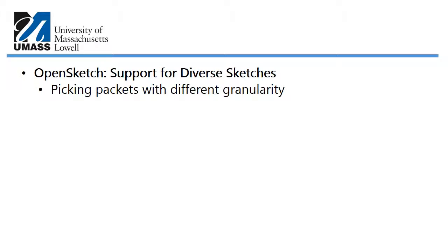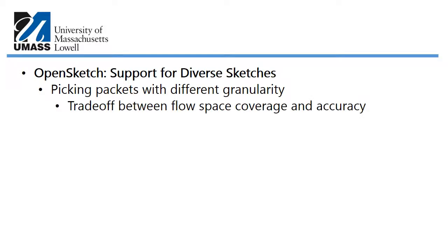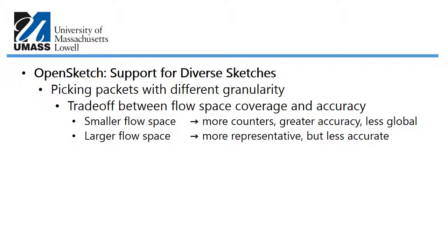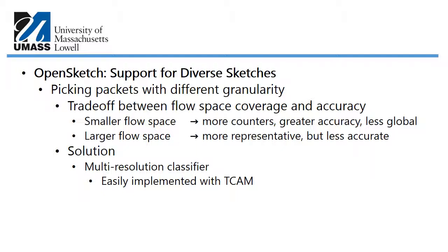OpenSketch supports diverse sketches, including picking packets with different granularity. There is a trade-off between flow space coverage and accuracy: a smaller flow space means more counters and greater accuracy but less global representativeness, while a larger flow space is more representative but less accurate. OpenSketch's solution is a multi-resolution classifier, which is easily implemented with TCAM.